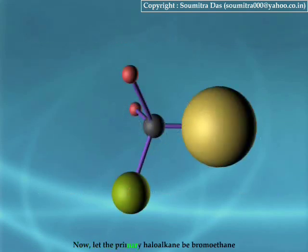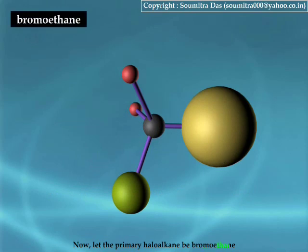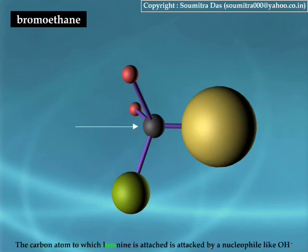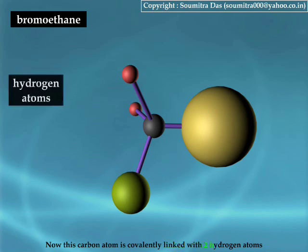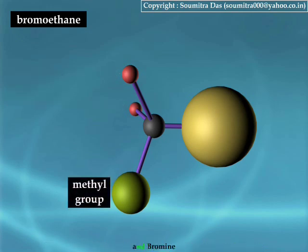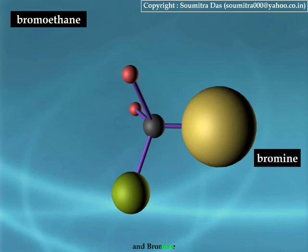Now let the primary haloalkane be bromoethane. The carbon atom to which bromine is attached is attacked by a nucleophile like OH-. This carbon atom is covalently linked with two hydrogen atoms, one methyl group, and bromine.